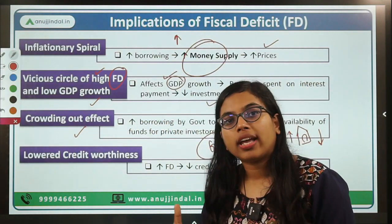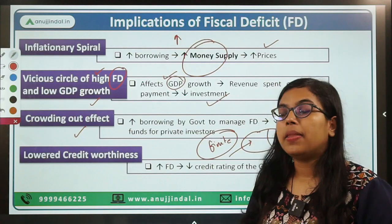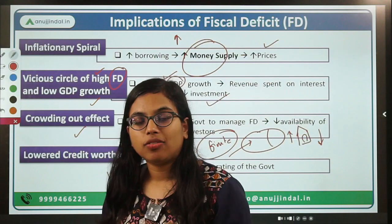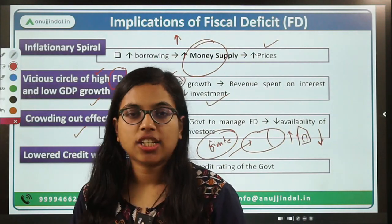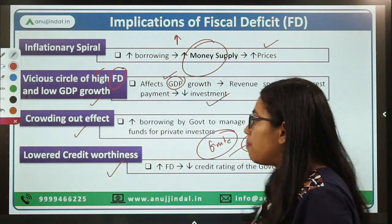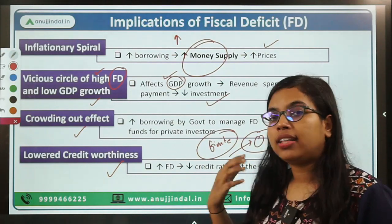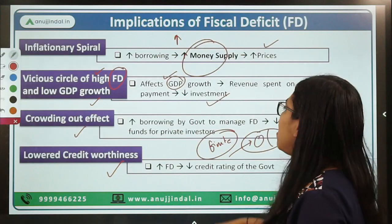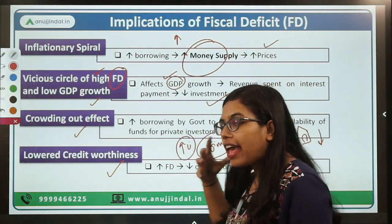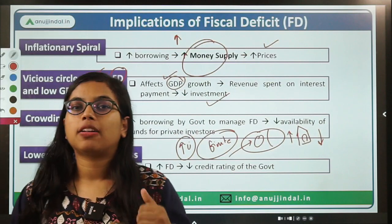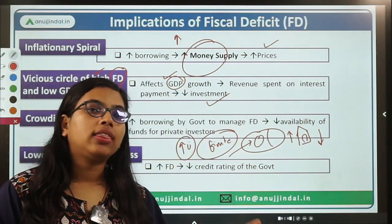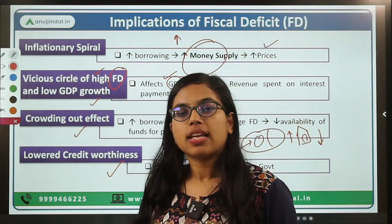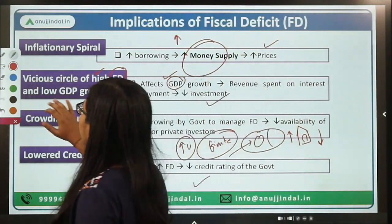This is known as crowding out of private investment — the amount of money available to private investors is lowered because the government is taking that money to make payment for the interest on loans it has taken. Because of this crowding out effect, there will be lower credit worthiness of the government. Less money will be available and everyone knows the government is not creating productive assets, so people will start charging higher interest rates. Higher interest rates mean confidence in that government has reduced, and therefore you will be getting a lower credit rating.